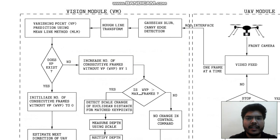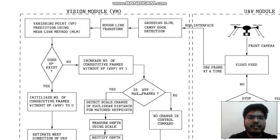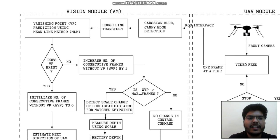This is the block diagram of the entire algorithm. On the right side of the screen is the UAV module with a front camera. A constant video feed is sent to the ground control station, where frame by frame processing takes place. Initially, the received frame is converted to grayscale and a Gaussian blur is applied to remove noise. Then the Canny edge detection algorithm is applied to detect edges, followed by the Hough line transform to find edges of interest.